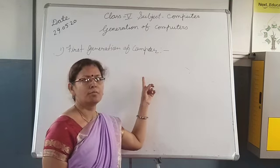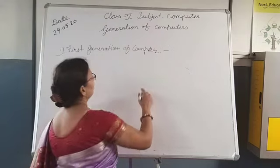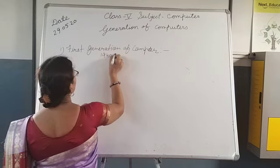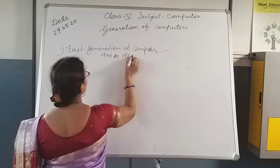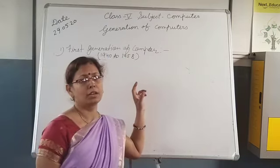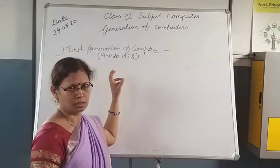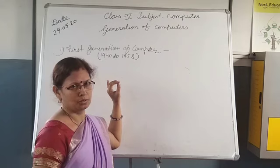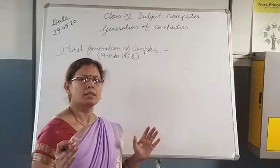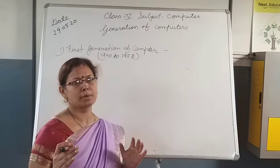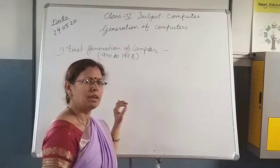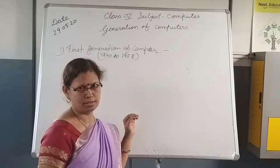The time period of the first generation of computers was 1940 to 1958. What happened in this generation? The main electronic component used was the vacuum tube. Due to these electronic components, the size of the computer increased and it took more space and consumed more electricity. In this generation, assembly level language and machine level language were used.